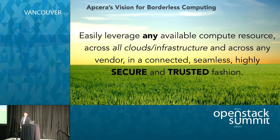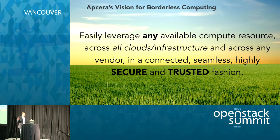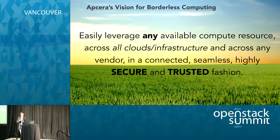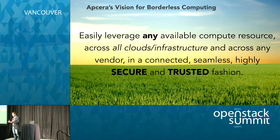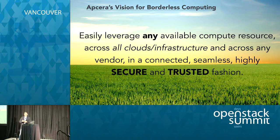At Epsera, we want to easily leverage any available compute resource — and by compute I mean not just compute but network, storage, and services — across all clouds, all infrastructure, from any vendor, in a connected, seamless, but highly secure and trusted fashion. I've been talking a lot about trust lately, and it's interesting because I can't really define it, but you know when you have it and you know when you don't. A lot of people don't have trust in the public cloud yet, and they don't have trust in any type of hybrid cloud. Customers really get wigged out when we try to draw a connective line between what's running on-premise in their data center and anything out in Amazon, Google, SoftLayer, or Azure.